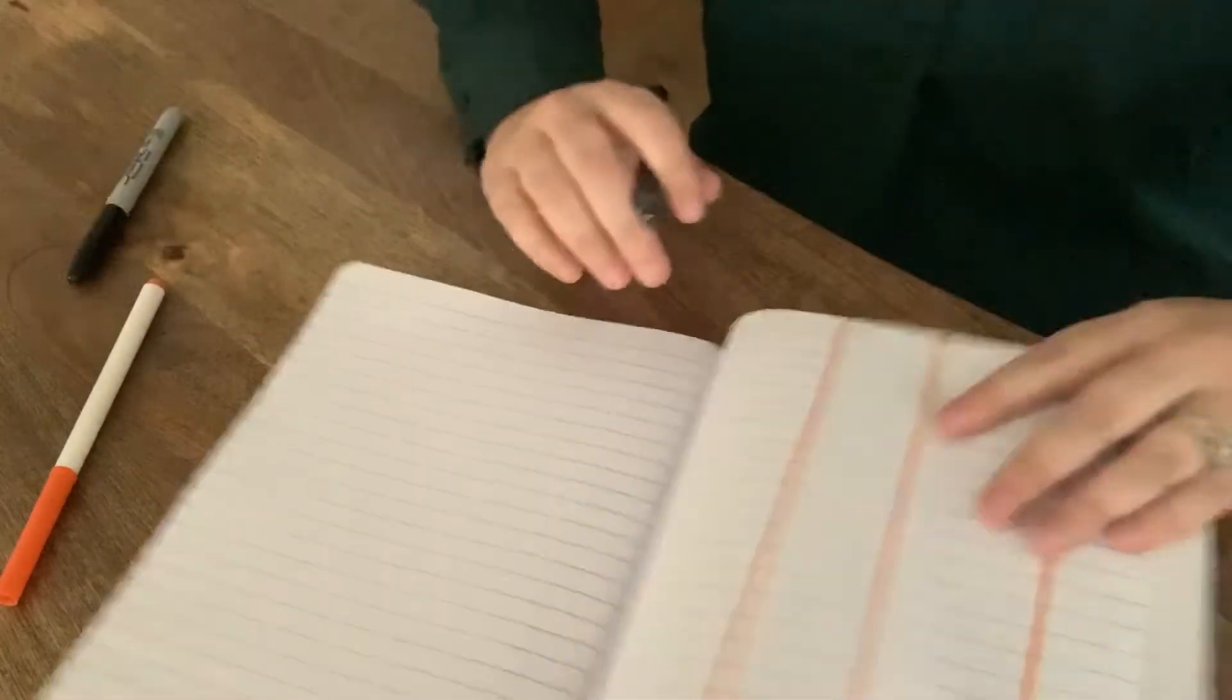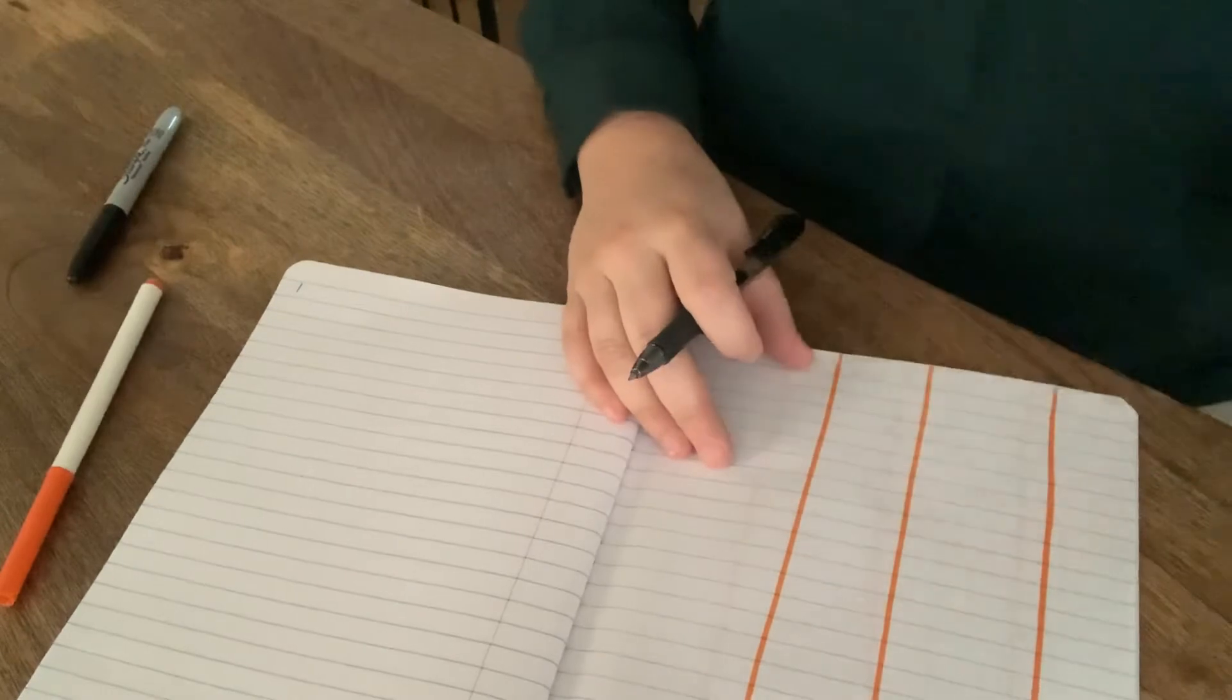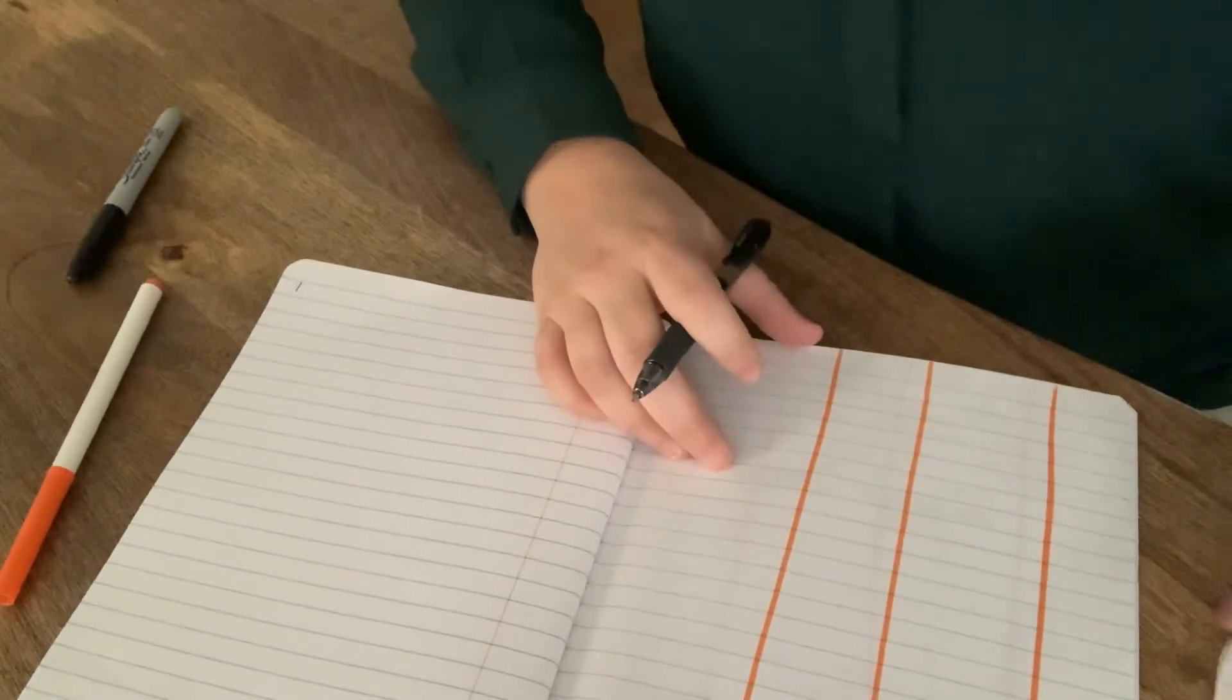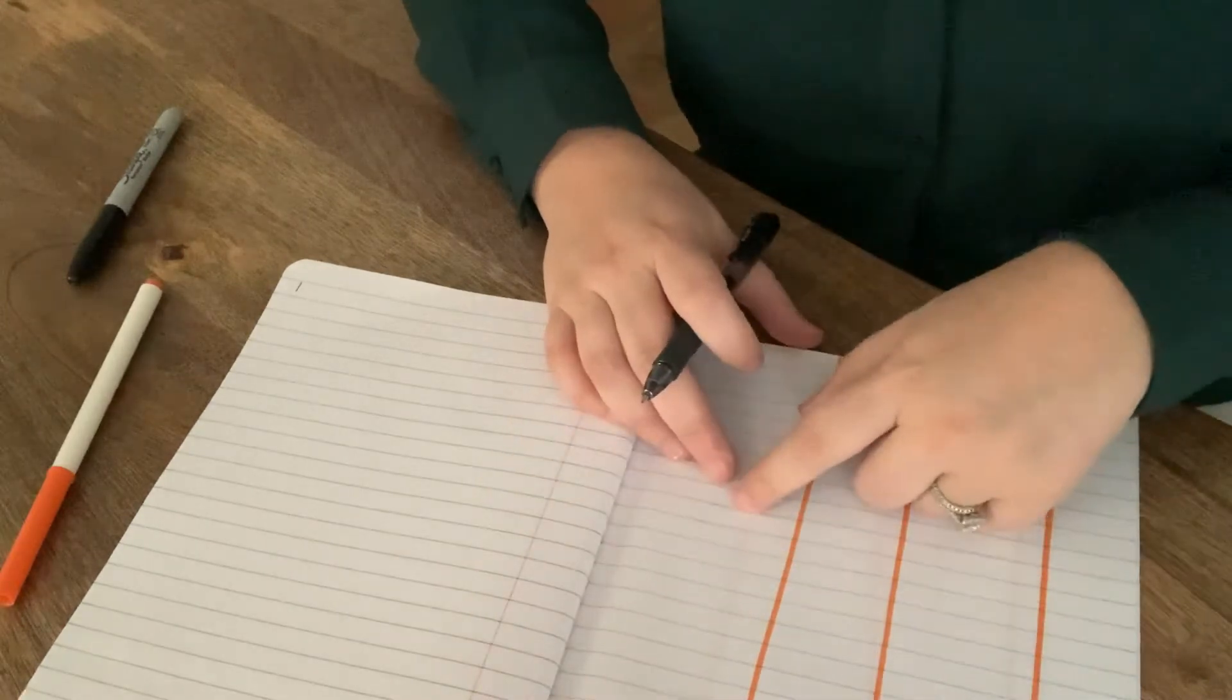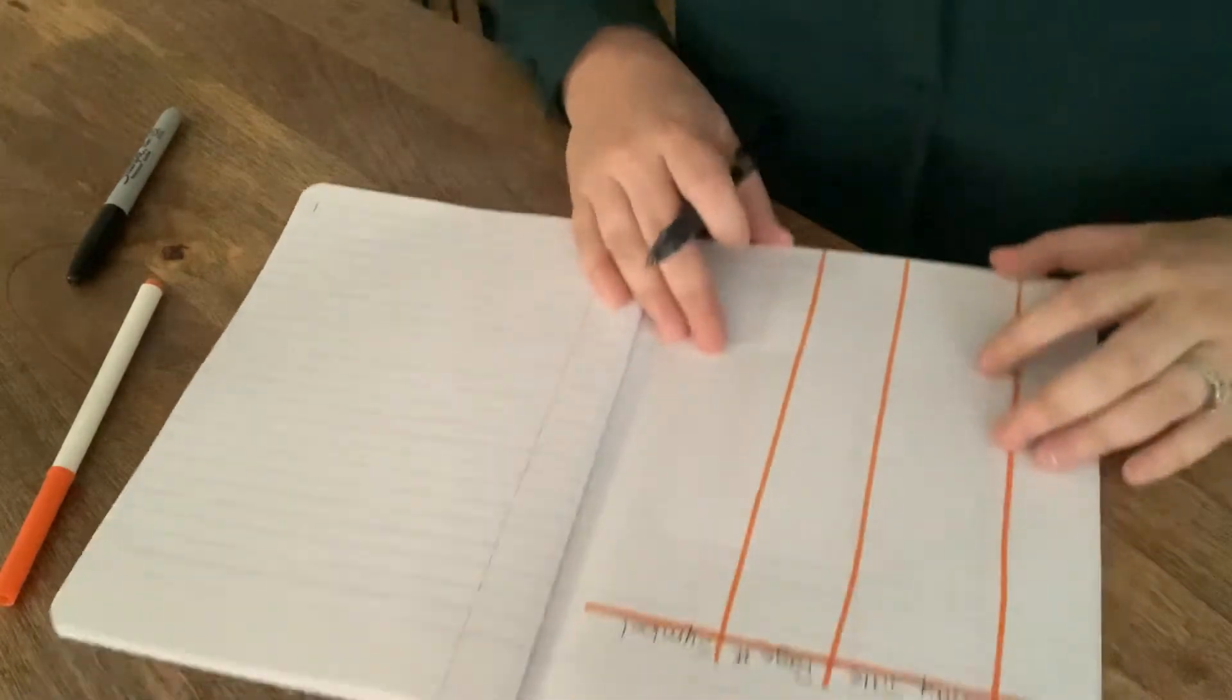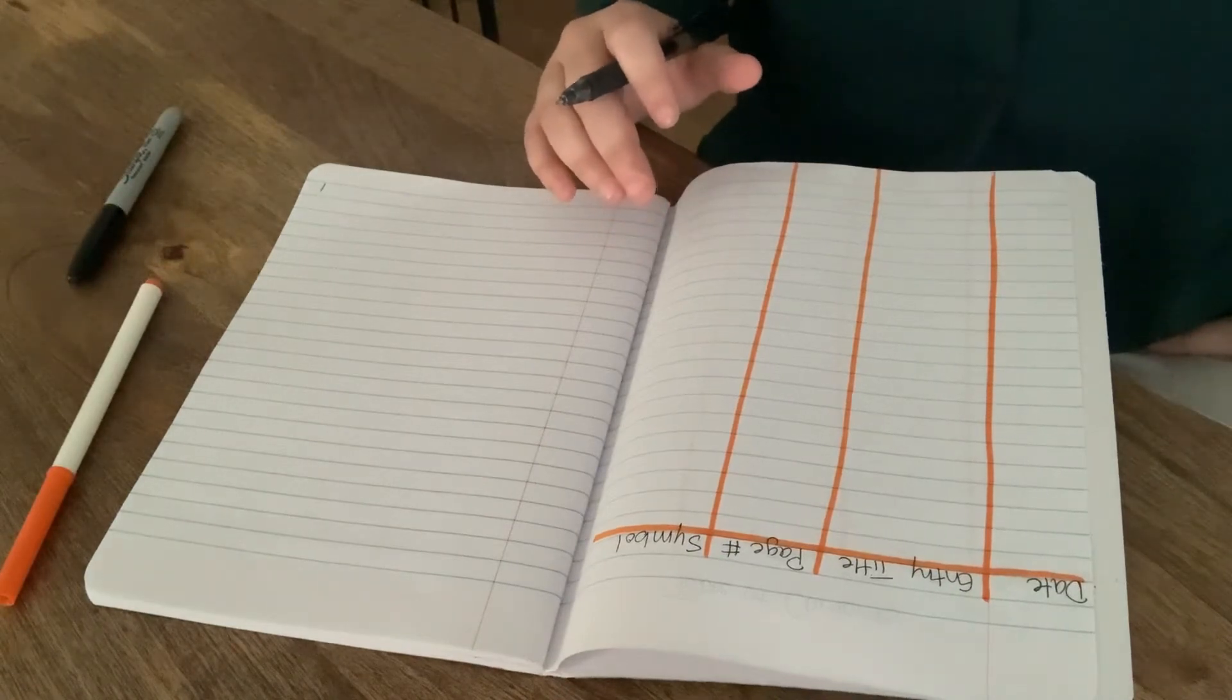All right. I'm only going to go to 15. You can go to 25. Pause this video if you'd like and keep numbering your journal. All right. Now, the next thing we need to do is talk about the symbols. There's going to be three different kinds of symbols.